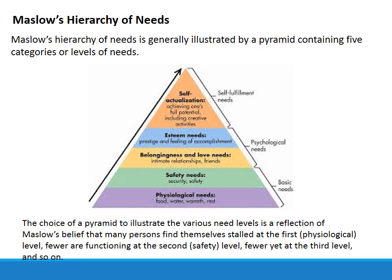Kind of your Oprah Winfrey moment. The choice of a pyramid to illustrate the various need levels is a reflection of Maslow's belief that many persons find themselves stalled at the first — physiological needs. Fewer are functioning at the second, safety level. Fewer yet are at the third level, and so on. In other words, it gets harder as you go up. Just taking care of our basic needs is what we really focus on first. You can't find self-actualization if you're homeless, in other words.